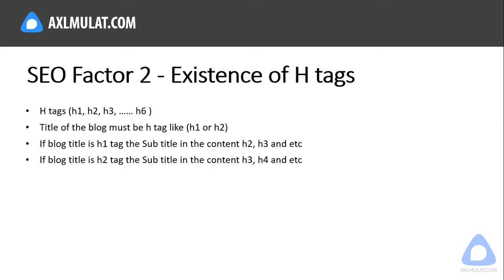SEO factor number 2: existence of H tags. Blog content must have H tags like H1, H2, H3, and so on. The title of the blog must be an H tag like H1 or H2. If the blog title is already H1, the subtitle in the content is H2 or H3. If the blog title is H2, the subtitle in the content is H3, H4, etc.